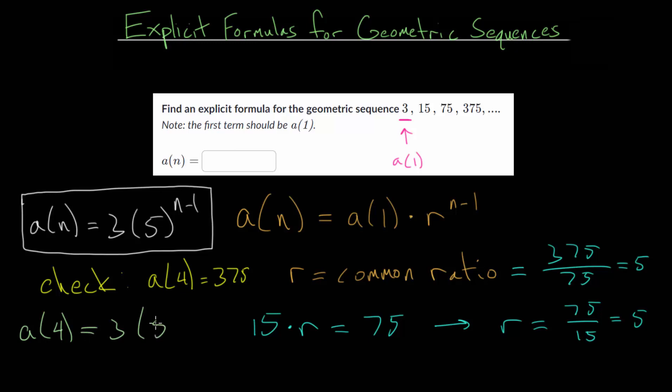So we get 3 times 5 to the 4 minus 1, or 3 times 5 to the third power, and 5 to the third power, if you multiply that 3 times, you get 125, and 3 times 125 is 375. So we got what we expected, which means we can feel very confident that this explicit formula is correct for our given sequence.